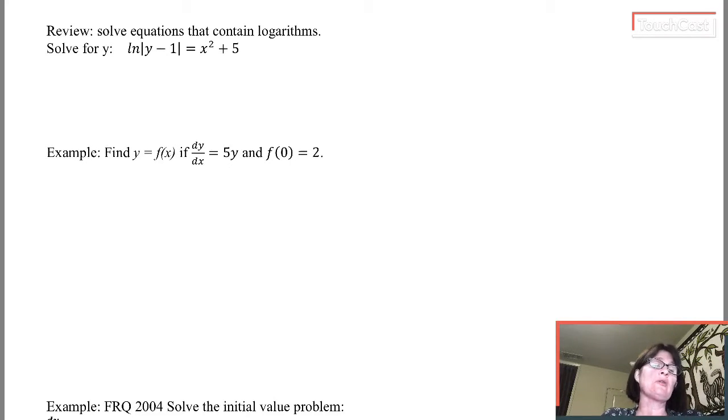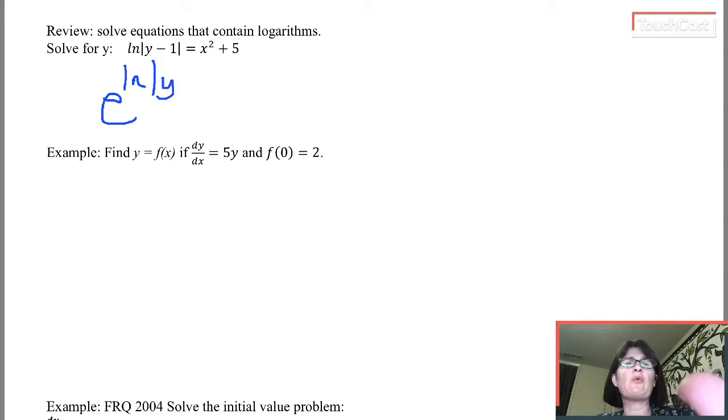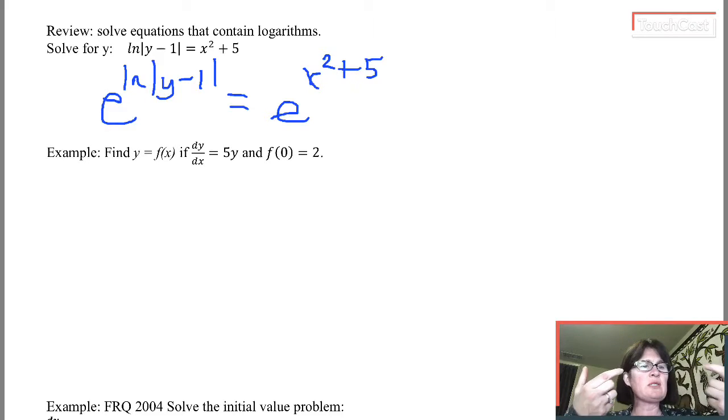The way to undo a natural log is with what we call exponentiation. It just means making both sides of your equation the exponent on a base of e. So this is what I would write. I would write e to the natural log of absolute value of y minus 1 equals e to the x squared plus 5. So now whatever was the left and right side of the equation is now the exponents on a base of e.